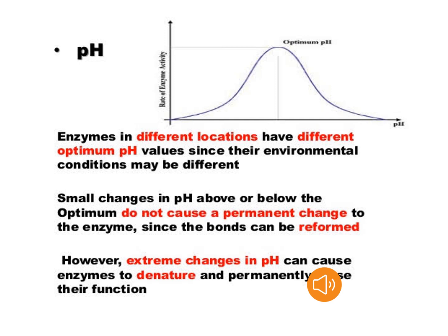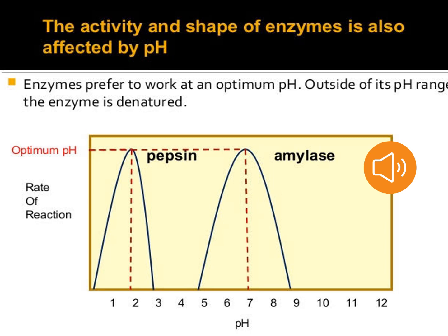Small changes in pH have no permanent effect since the bonds can be reformed. However, extreme changes in pH can cause the enzyme to denature and permanently lose their function. So, a slight change has no effect on enzymatic activity, but extreme changes in pH can denature the enzymes.